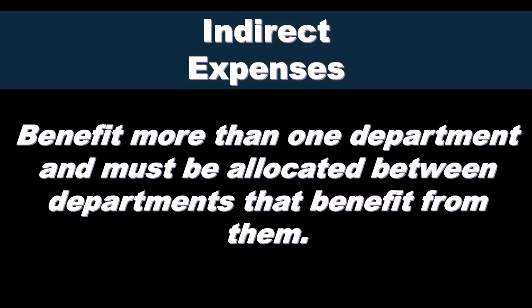We also have indirect expenses. Indirect expenses benefit more than one department and must be allocated between the departments that benefit from them. These are the ones that are more complex for the accounting department. There are costs needed by multiple departments, making them more difficult to assign. They are often costs that the departments themselves don't have as much control over — less controllable compared to direct costs.